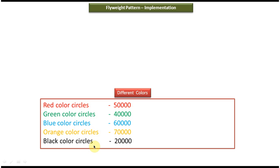What we used to do is we will use the new operator and create the circle objects. If I create 3 lakhs new circle objects, it will occupy more memory and it will affect the performance of the application. So how can I improve the performance? I can use the flyweight design pattern to avoid this kind of memory issue.